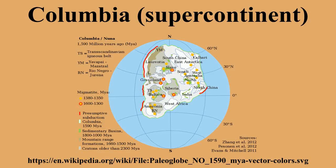The cratonic blocks of Laurentia were sutured along the 1.9 to 1.8 Ga Trans-Hudson, Panakaen, Taltson-Thelon, Wathaman, Ungava, Torngat, and Nagssugtoqidian orogens. The Kola, Karelia, Volgo-Uralia, and Sarmatia cratons in Baltica were joined by the 1.9 to 1.8 Ga Kola-Karelia, Svecofennian, Volhyn-Central Russian, and Pachelma orogens.